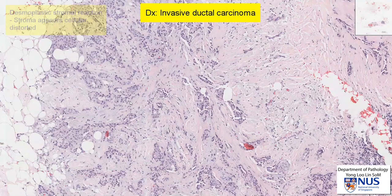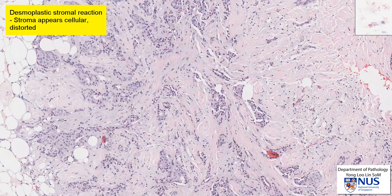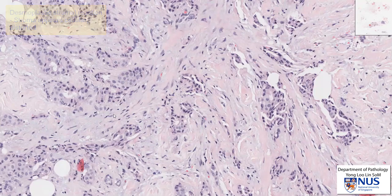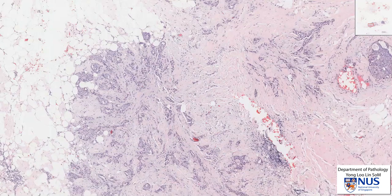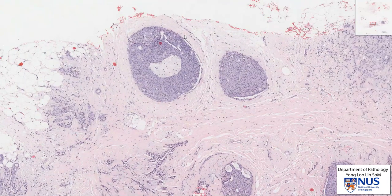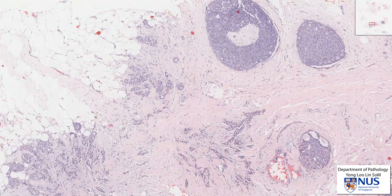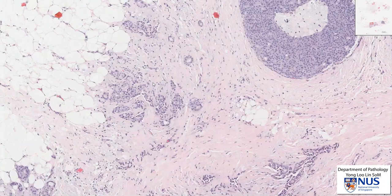We can see that the stroma has a desmoplastic reaction — it appears almost grayish, with more stromal spindly cells, making it more cellular than usual, because it is reacting to the infiltrating nests of tumor cells. This is how we differentiate invasive carcinoma from in situ carcinoma: in situ carcinoma has the low power architectural appearance of preexisting ducts and lobules with a preserved basal cell layer, whereas invasive carcinoma is composed of very irregular nests and glandular structures directly sitting in the stroma, and incites a desmoplastic stromal reaction.